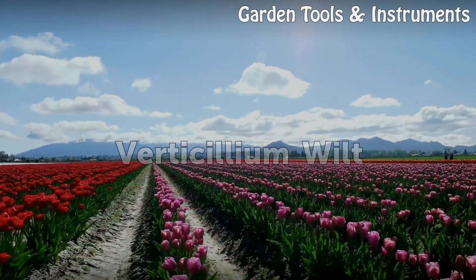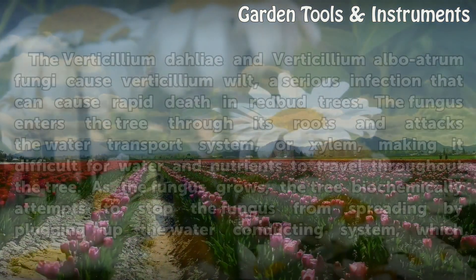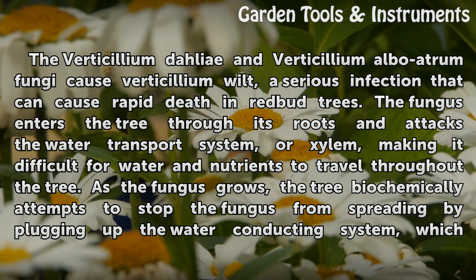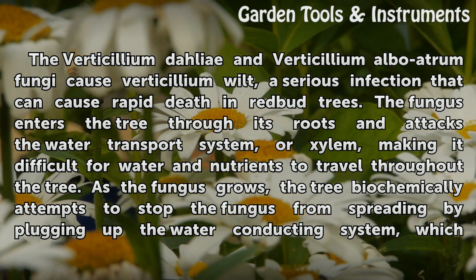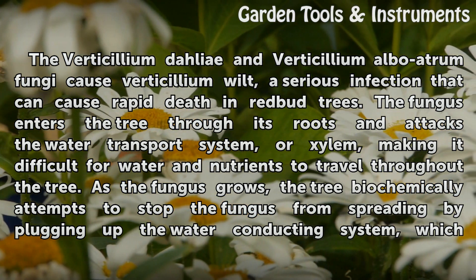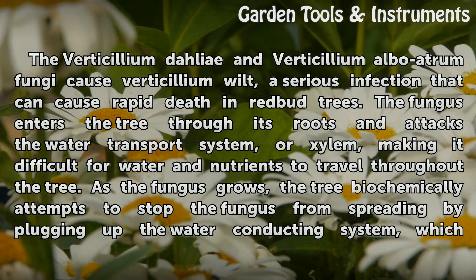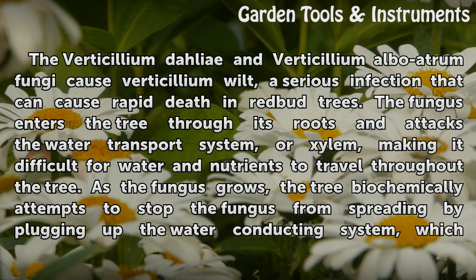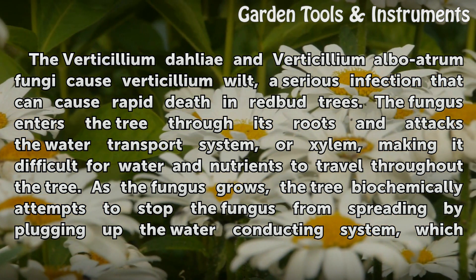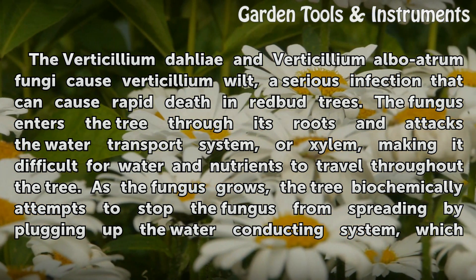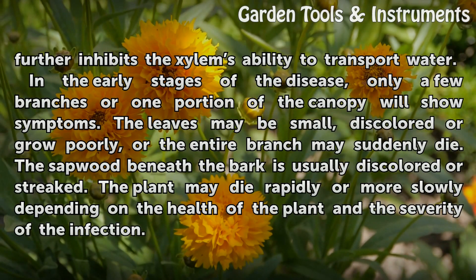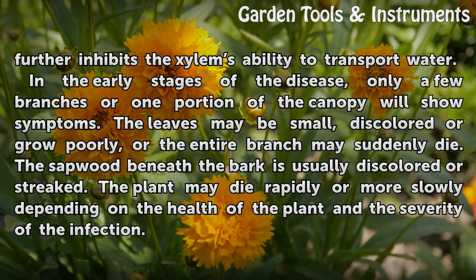Verticillium Wilt. The Verticillium dahliae and Verticillium albo-atrum fungi cause Verticillium wilt, a serious infection that can cause rapid death in redbud trees. The fungus enters the tree through its roots and attacks the water transport system, or xylem, making it difficult for water and nutrients to travel throughout the tree. As the fungus grows, the tree biochemically attempts to stop the fungus from spreading by plugging up the water-conducting system, which further inhibits the xylem's ability to transport water.